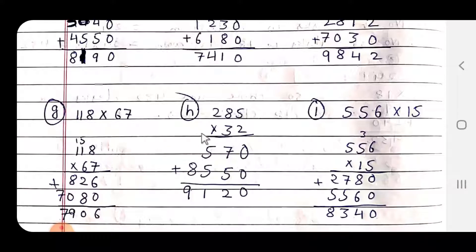You can already see the last answer. You can copy it easily. 556 x 15. 6 x 5 = 33, 3 carry over. 5 x 5 = 25 plus 3 = 28, 2 carry over. 5 x 5 = 25 plus 2 = 6. Then 1 x 6 = 5, 1 x 5 = 5. 6 + 8 = 14, 1 carry over. 5 + 7 = 12, 1 plus 1 = 13, 1 carry over. 5 x 2 = 7 plus 1 = 8.